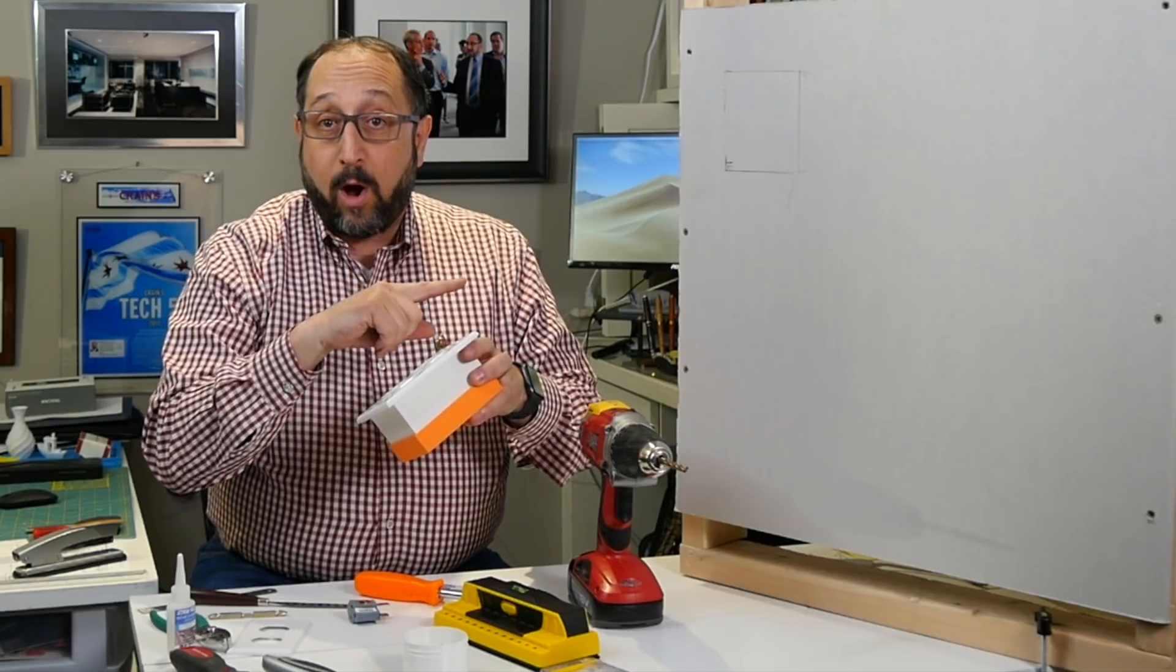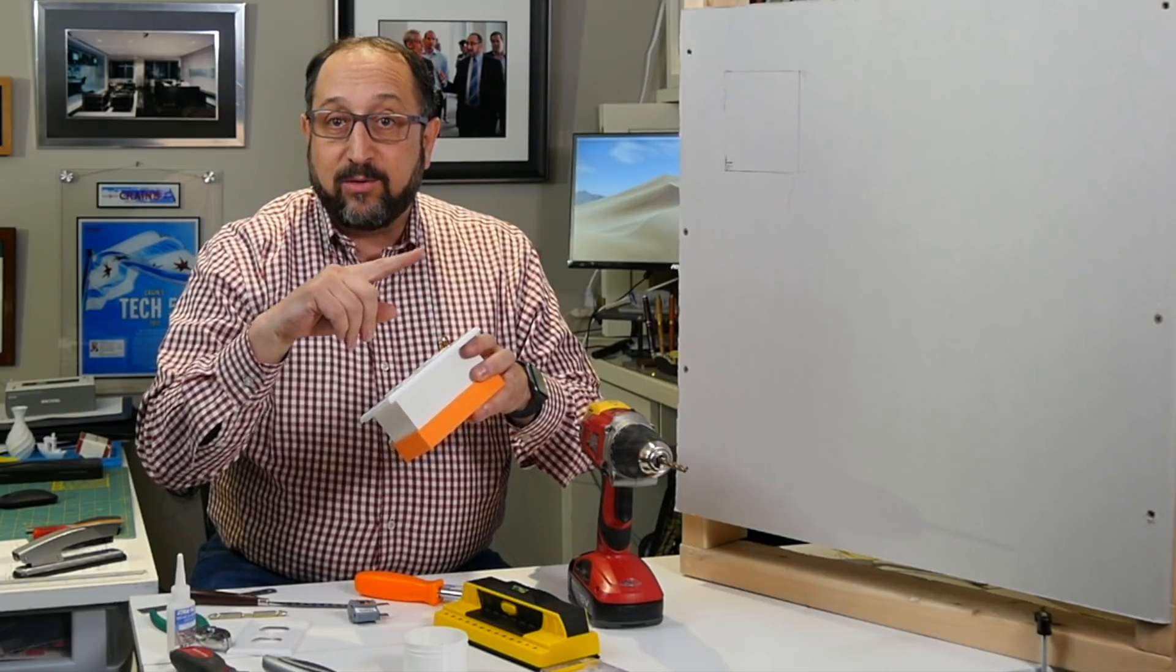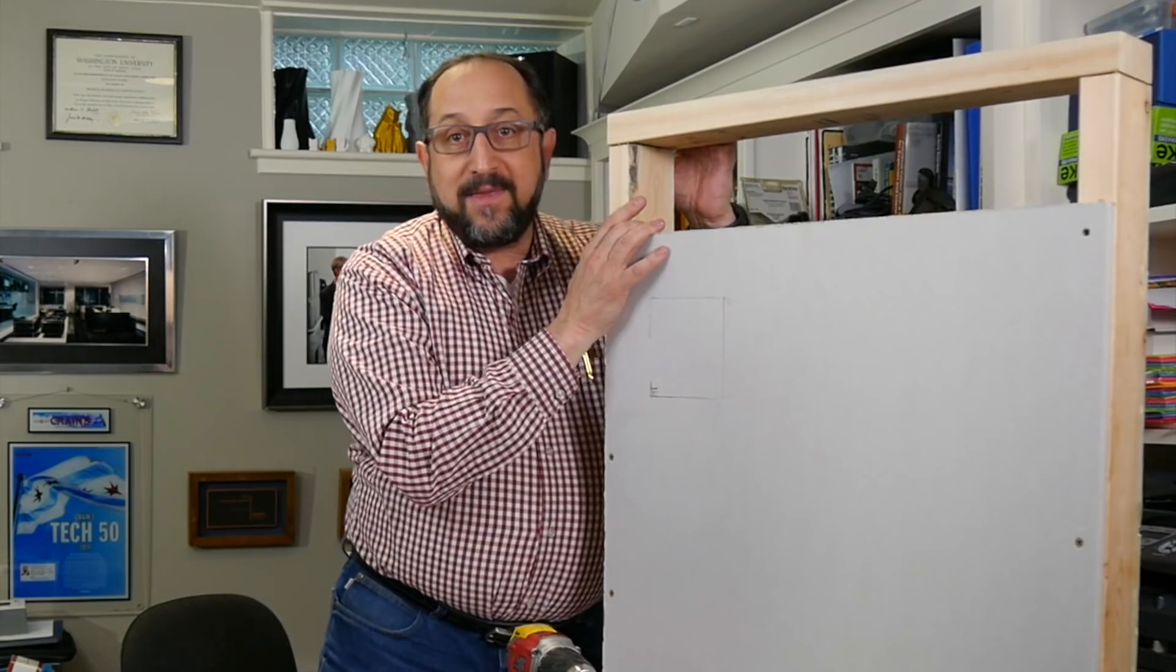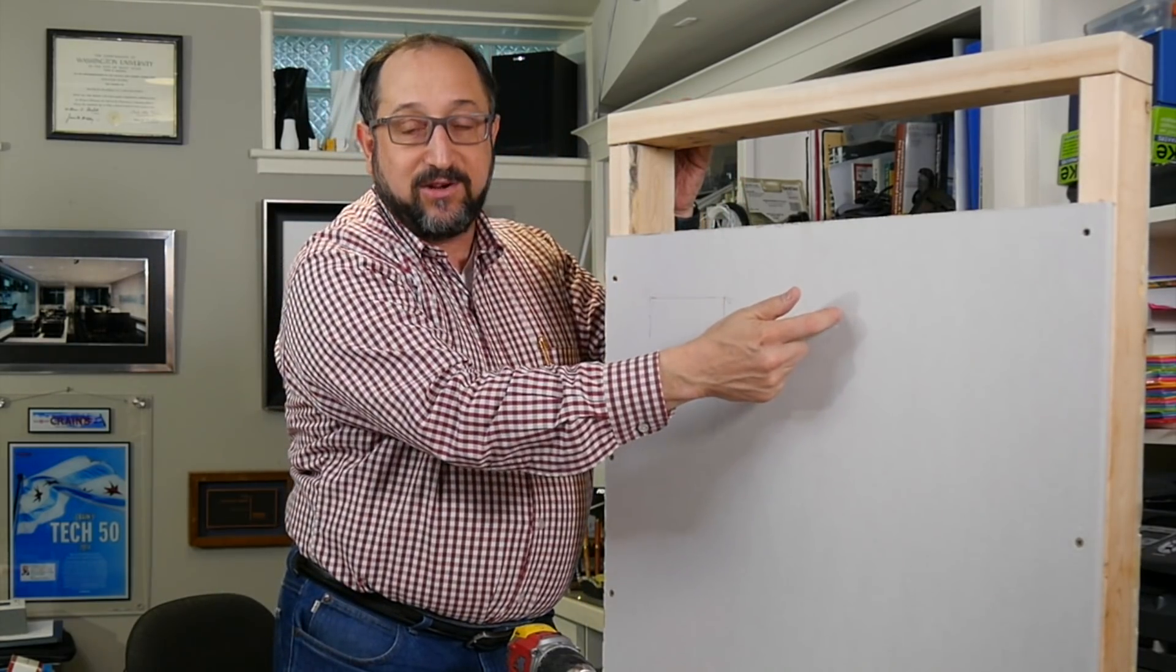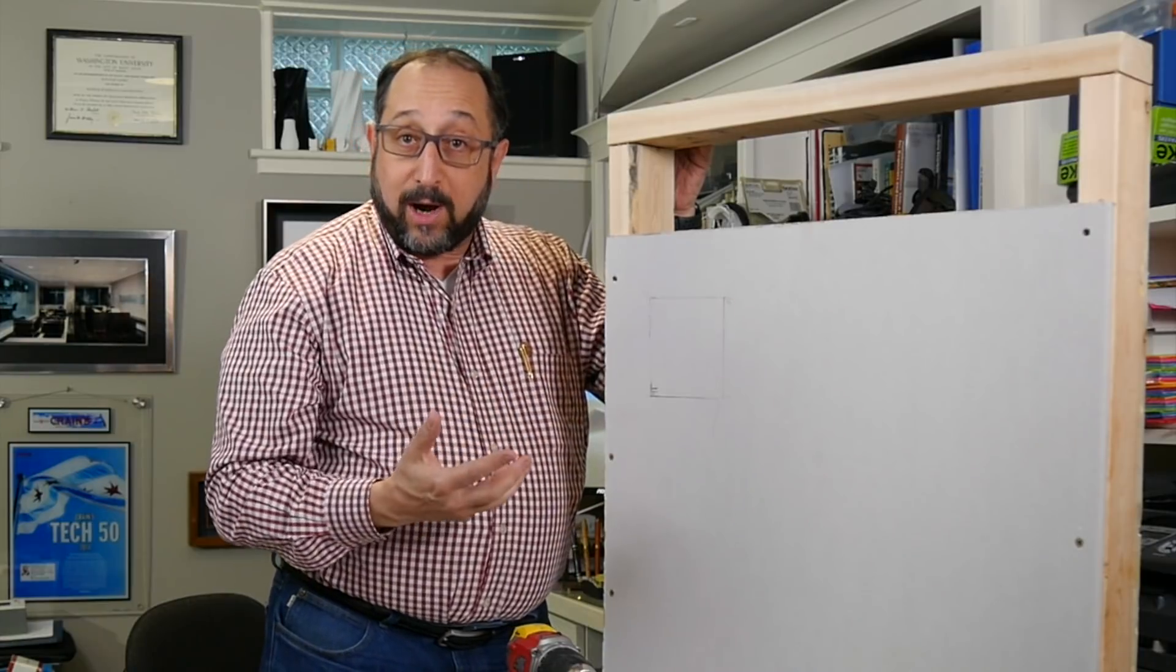Now let's take a look at our wall and what we're going to need to do to install this. In the United States, walls are made of 2x4s. 2x4s are on 16 inch centers. In Europe they're not.